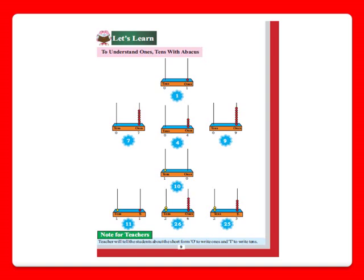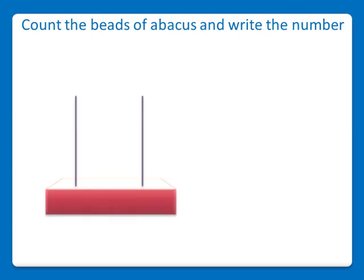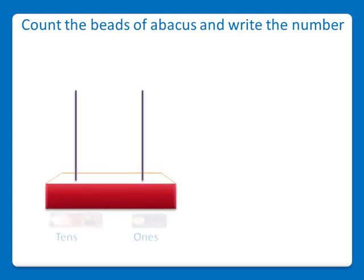Now moving to the next topic. We will count the beads of the abacus and write the numbers in figures and words. On the abacus, instead of using ones, tens, and currency notes, we will write the short form: O for ones and T for tens.